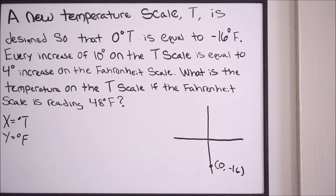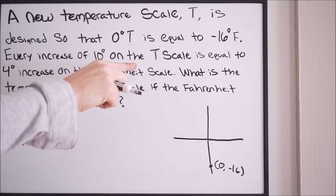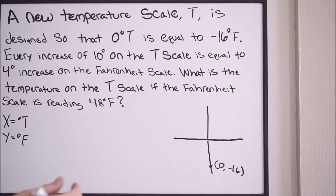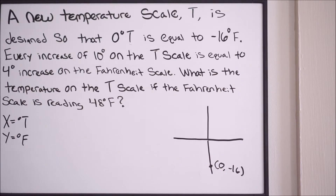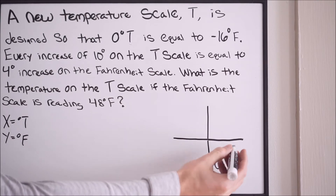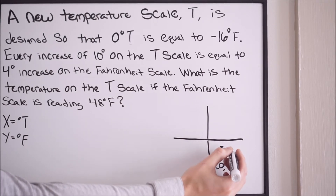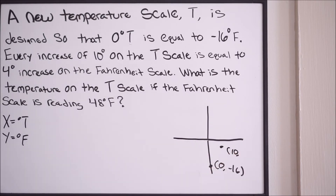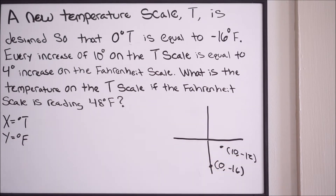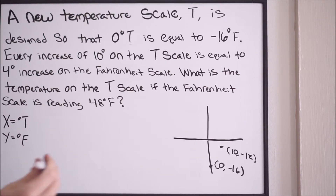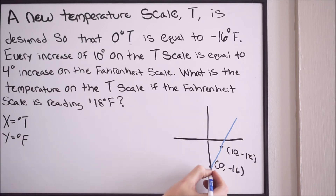We can find another point because they give us more information. Every increase of 10 degrees on the T scale equals a 4 degree increase on the Fahrenheit scale. Starting from our baseline point, if we add 10 degrees on the T scale — so x becomes 10 — we add 4 to the Fahrenheit: negative 16 plus 4 gives negative 12. So our second point is (10, -12). Connecting these two points gives us a linear function.